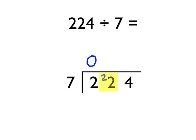Then we say to ourselves: how many times does that 7 go into 22? Well, 3 sevens are 21 — we wouldn't get 4 sevens in, because that would be 28. So it goes in 3 times to make 21, and there's 1 remainder. That 1 remainder we write up here to turn this number into 14. Then we say: how many times does that 7 go into 14? Well, it goes in twice — 2 sevens are 14. So 32 is our answer.